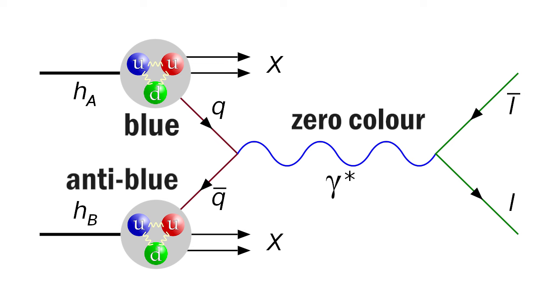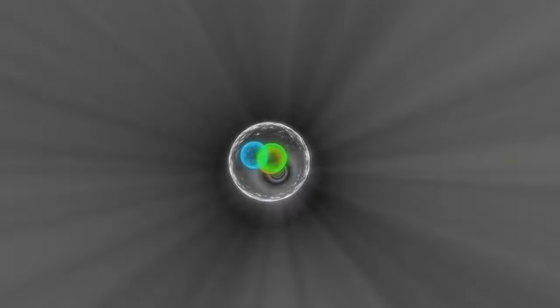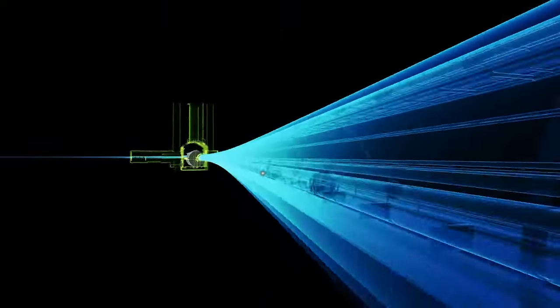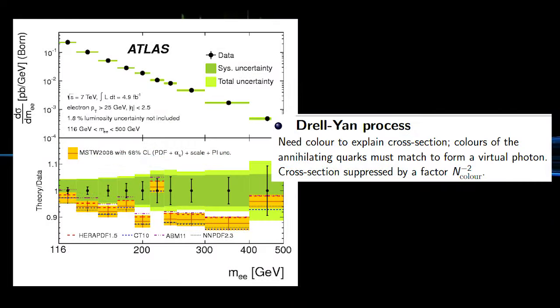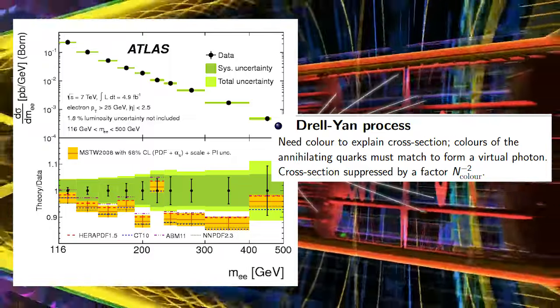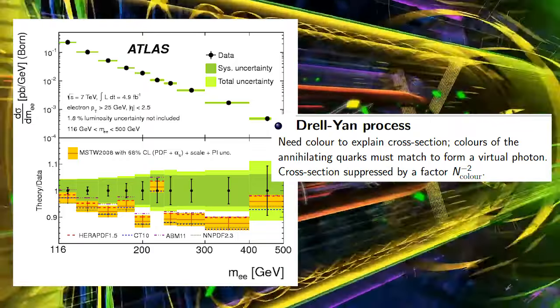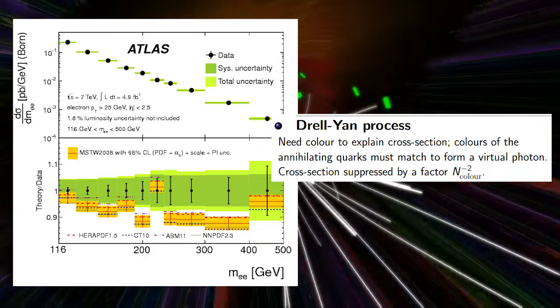Zero color has to come in because zero color is going out with the photon, and color charge is conserved. This constraint on the color of the quarks that can interact suppresses the likelihood of a Drell-Yan process occurring by a factor of one over the number of colors in nature squared. When we look at experimental data, the number of Drell-Yan interactions during hadron-hadron collisions can only be adequately explained if this color suppression factor of one over nine is taken into account. Again, Drell-Yan processes provide incredibly strong evidence, not only for the existence of color, but for the existence of exactly three colors.